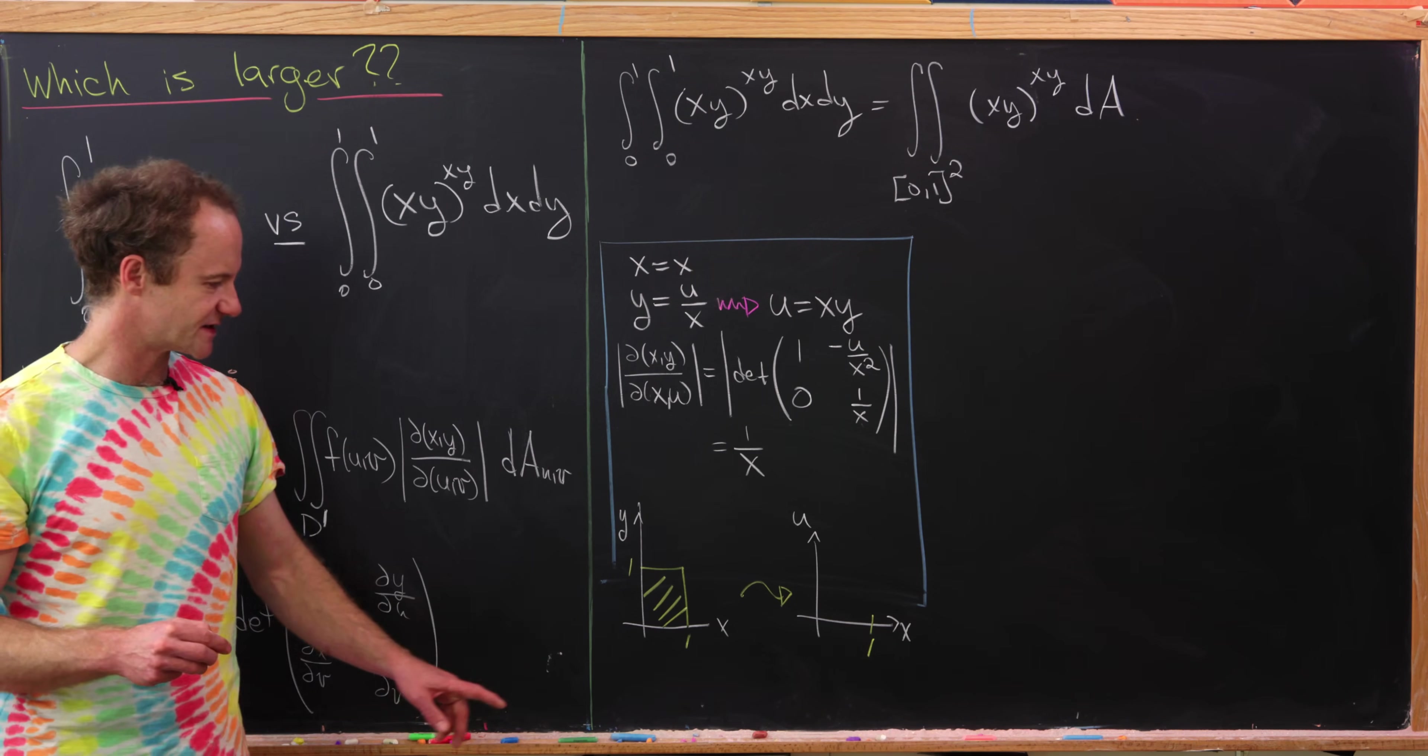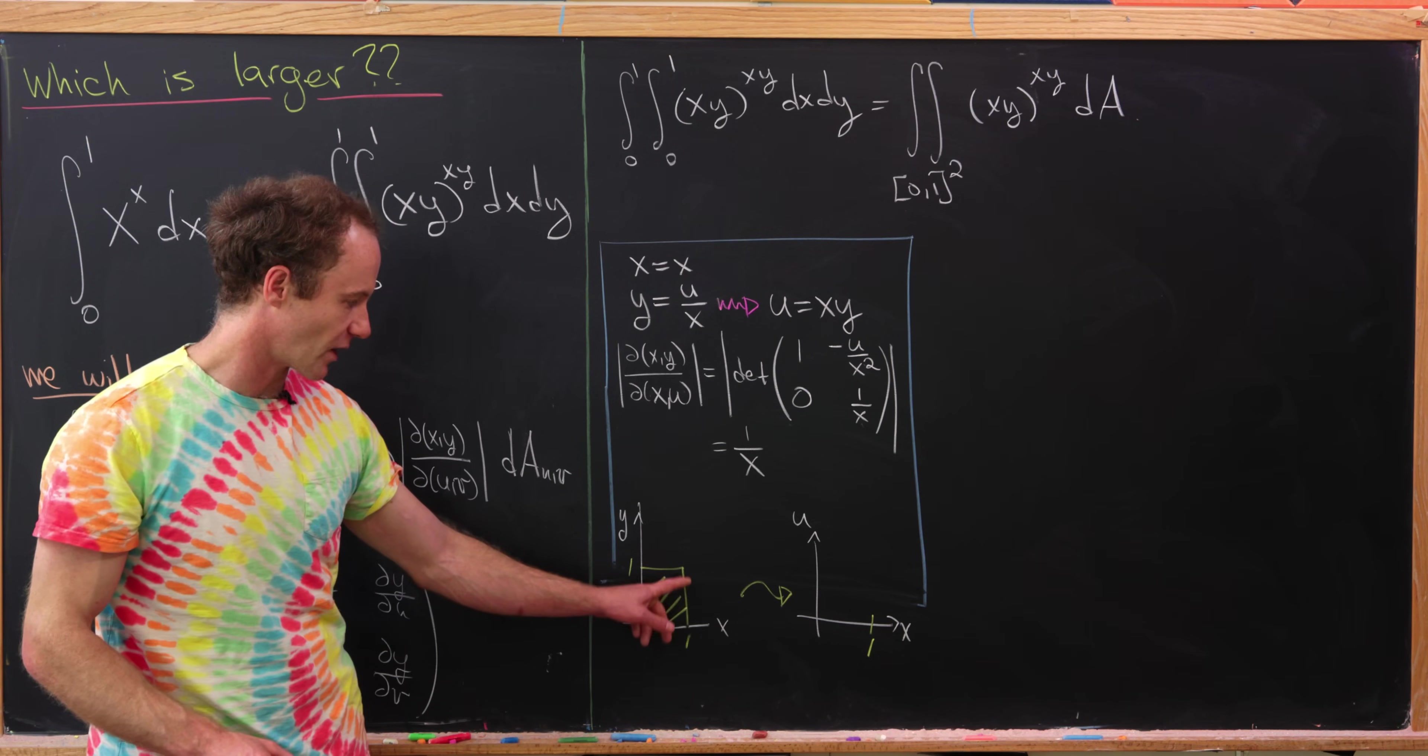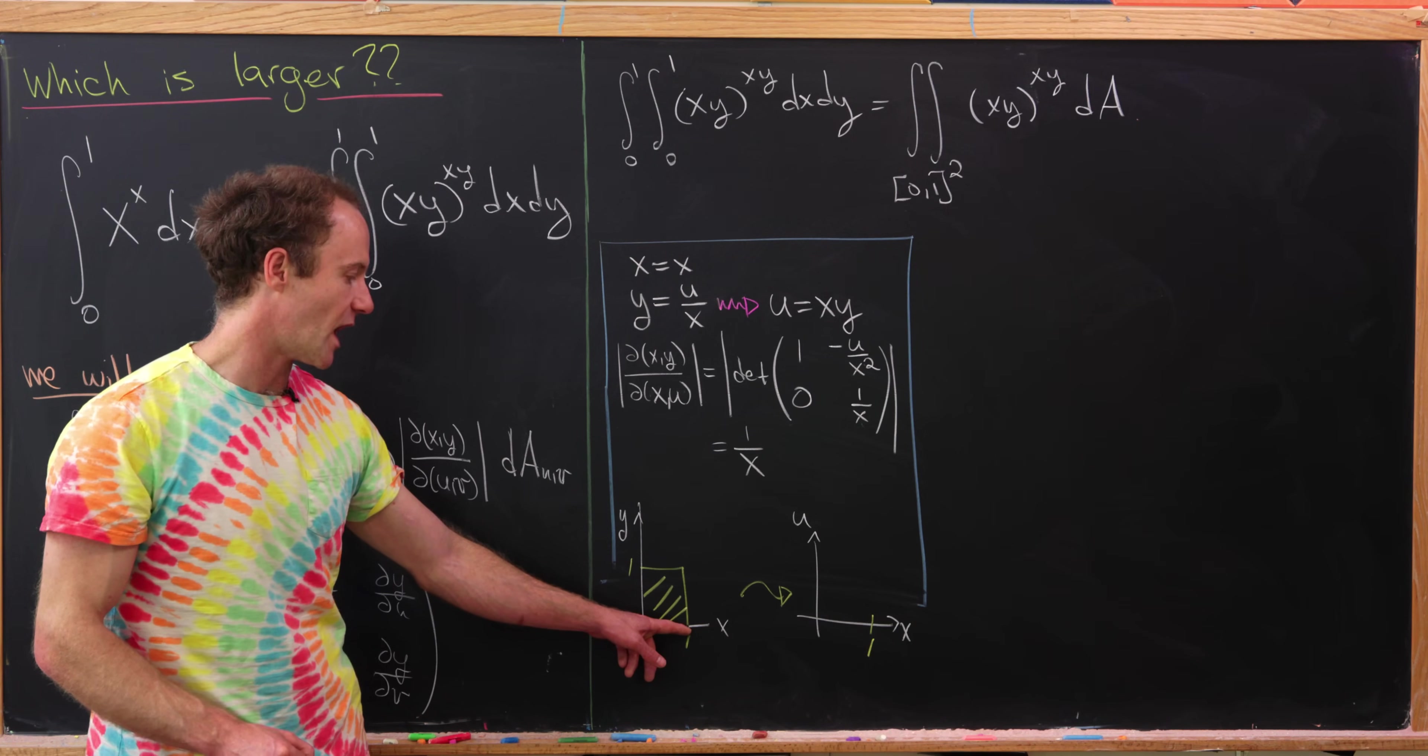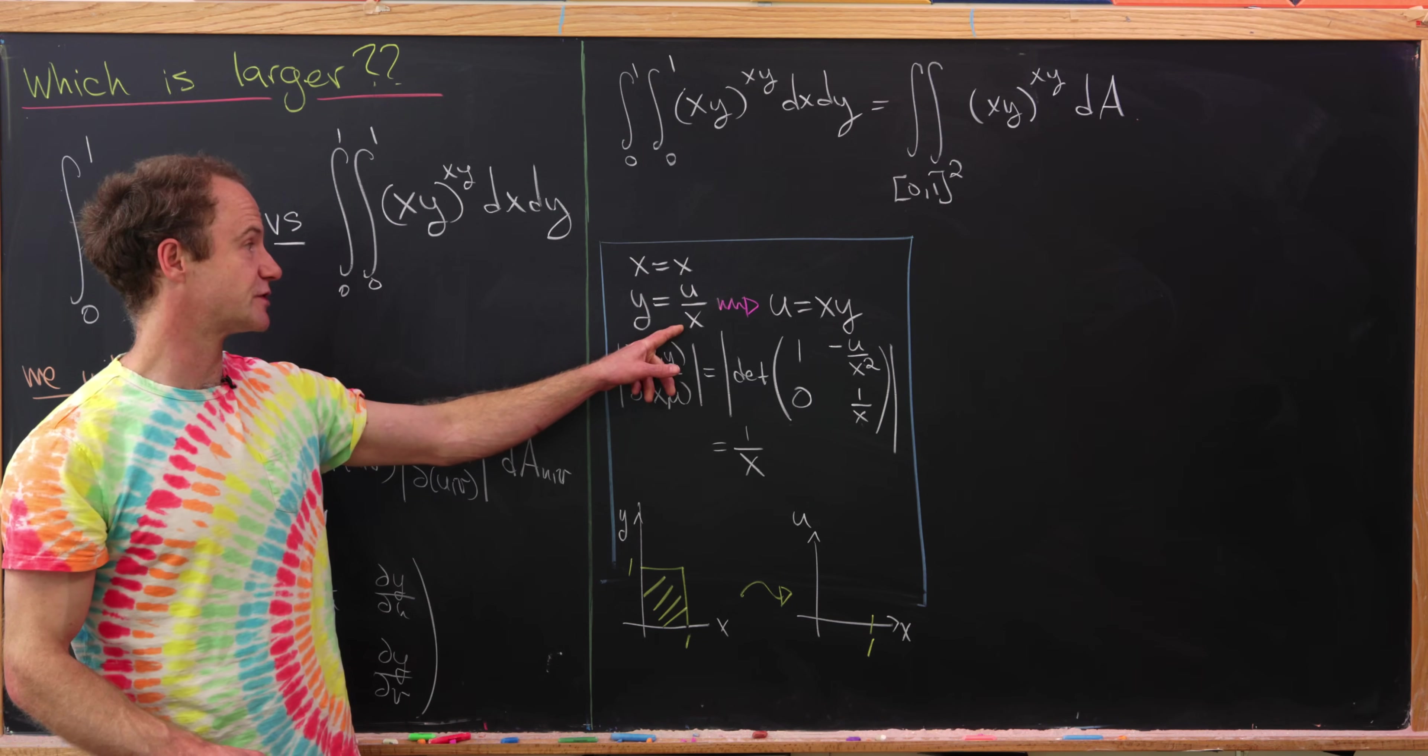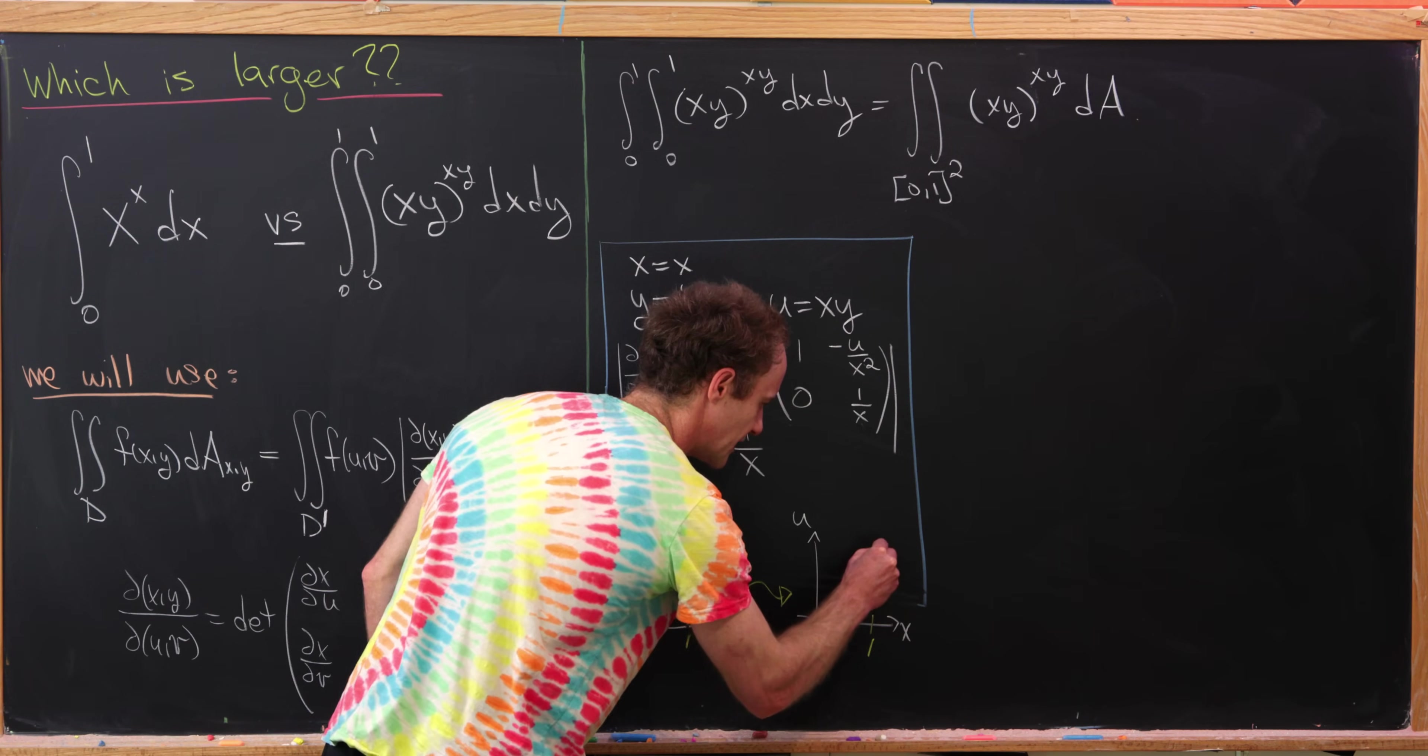Now let's look at the rest of this. On this right edge, we have x is always equal to 1 and y varies between 0 and 1. Well, that means that here x is going to be always equal to 1 and u will vary from 0 to 1, so that'll go up here to the point 1, 1 in this plane.